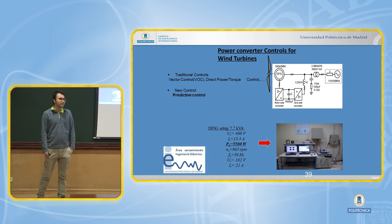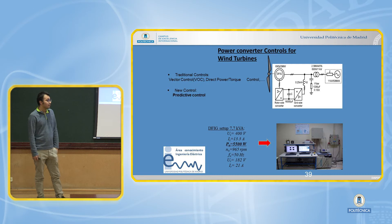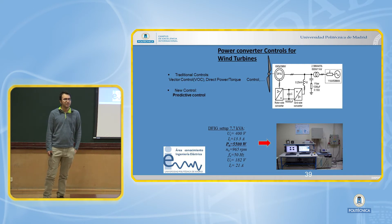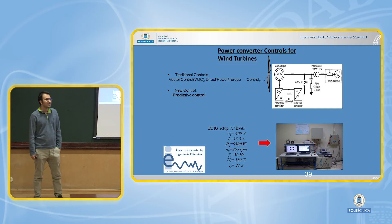Recently, researchers have proposed new controllers such as predictive control systems. This predictive control predicts the voltage vector sequences for the next switching period. But they also have some problems because they use the position of the rotor flux of the machines, and when the grid is disturbed or has harmonics, they cannot work very well.